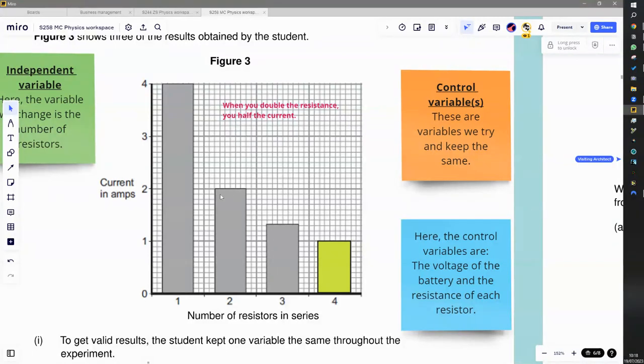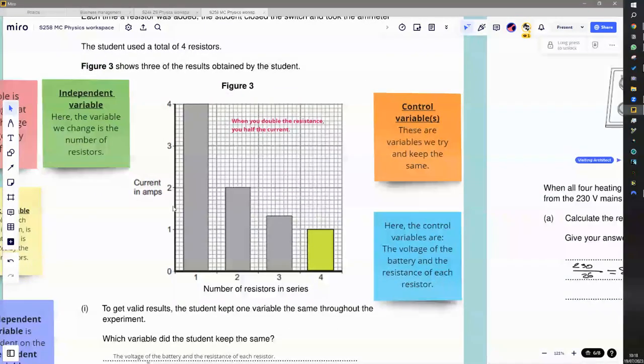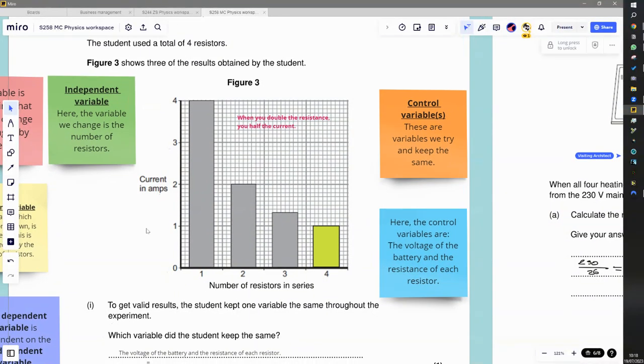That's not a big surprise when you think about it, because resistance is just how difficult it is for current to flow. If it's twice as difficult, the current is going to be half as much. But if you want, we could also do it in terms of the equation.